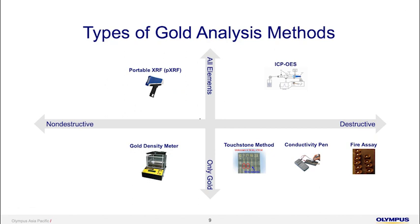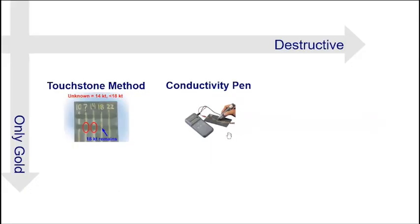We can also use conductivity testing. One important thing is that the surface of the sample matters a lot. If the surface is dirty, has a coating, or has a plastic cover on top, the conductivity pen might not work because you cannot directly contact the gold sample. Sometimes you need to clean or polish the sample to make the surface clean enough to use the conductivity pen. This method also only gives you karatage rather than the actual elemental composition.